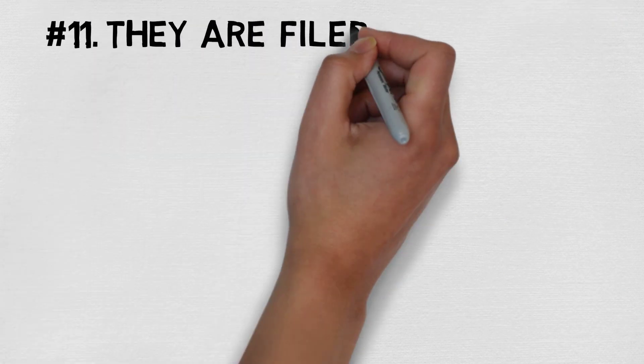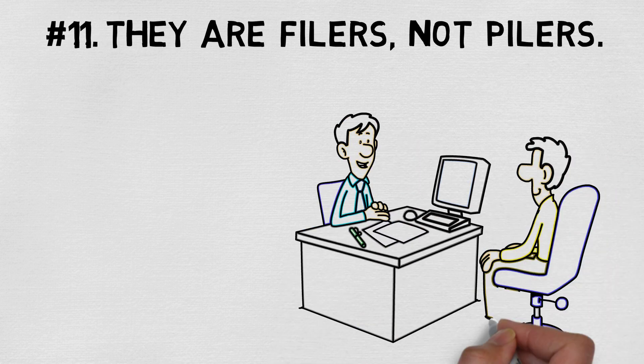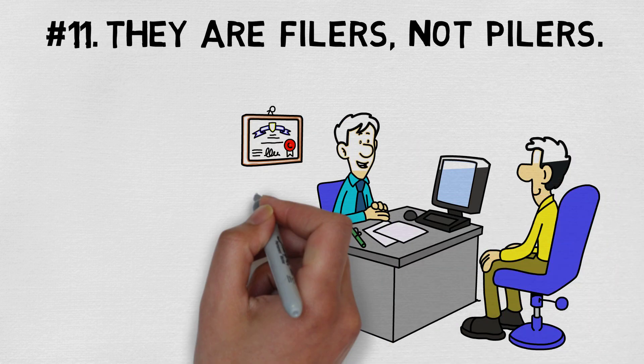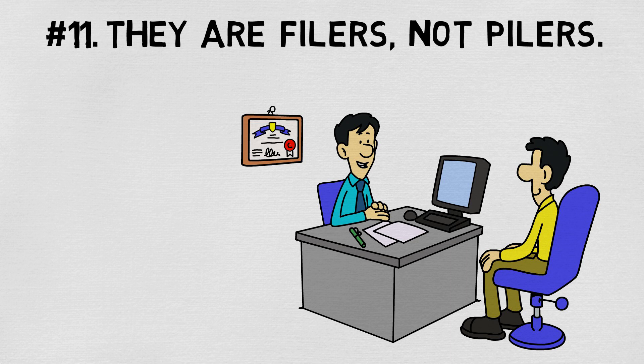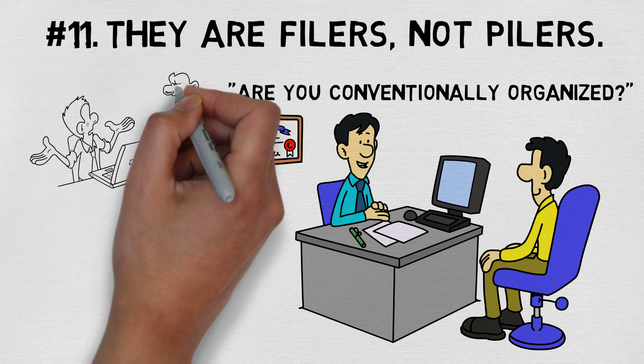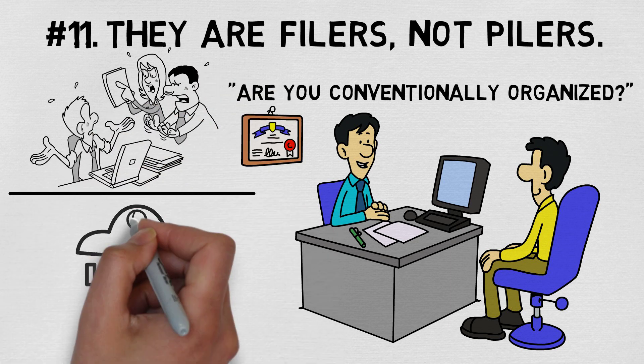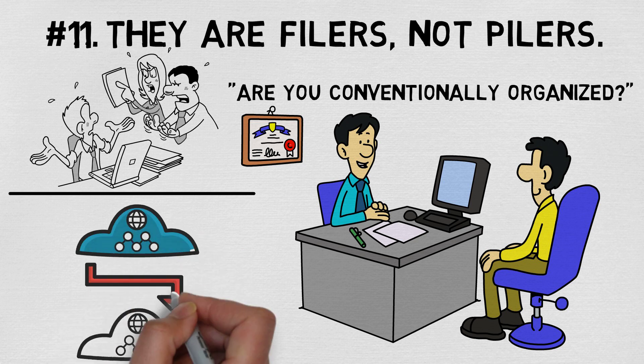Number eleven, they are filers, not pilers. I once had a job interview where I was asked if I was a piler or a filer. You can understand the gist of what this implies. It's basically asking, are you conventionally organized? While pilers may have a rhyme and reason within their chaos of piles, files are the sign of a typical intelligent person, which is being organized.